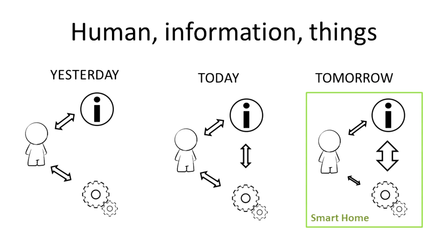So the next step will be integration of most electronics into one connected environment that will be smart enough to control itself automatically. As we can see, in this case the main exchange channel will be between devices, and the human will not have to take a lot of actions. He does not have to know much about how all the systems work.